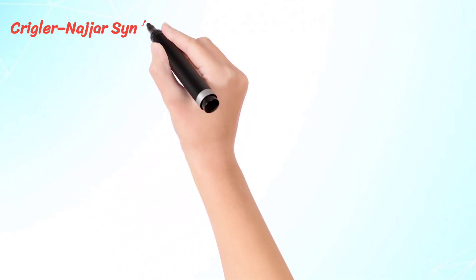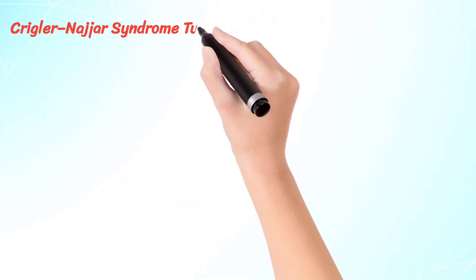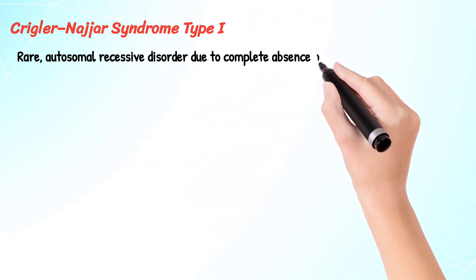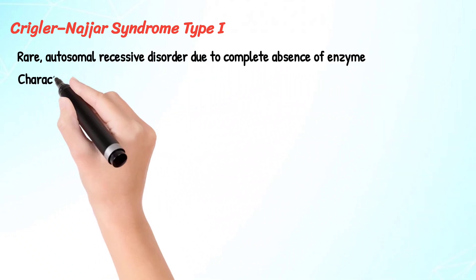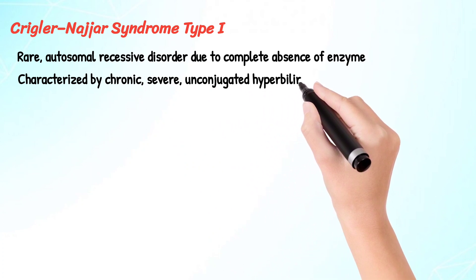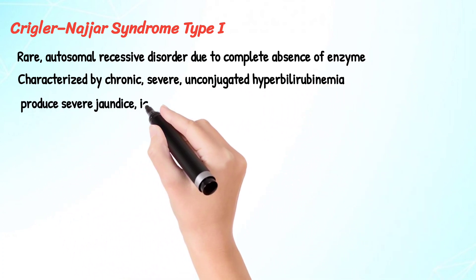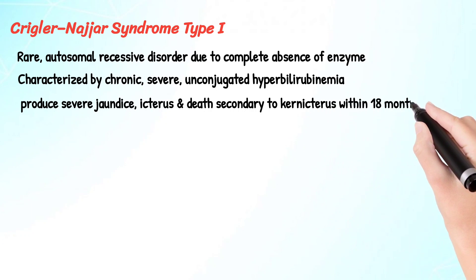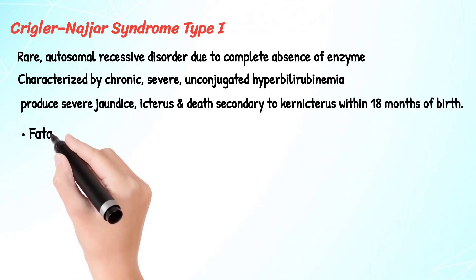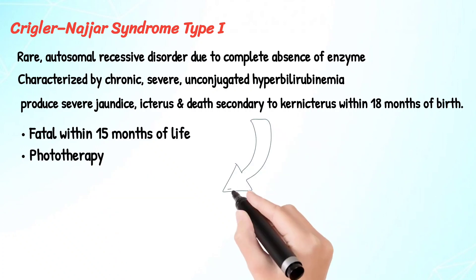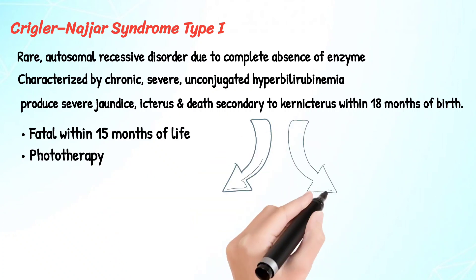Crigler-Najjar syndrome Type 1 is a rare autosomal recessive disorder due to complete absence of the enzyme, characterized by chronic severe unconjugated hyperbilirubinemia. It produces severe jaundice, icterus, and death secondary to kernicterus within 18 months of birth — fatal within 15 months of life. Treatment includes phototherapy.